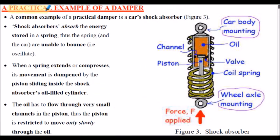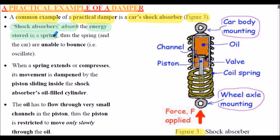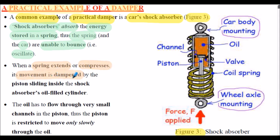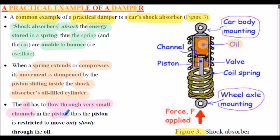Here's a practical example of a damper. A common example is a car shock absorber, shown in Figure 3. Shock absorbers absorb the energy stored in a spring — the coil spring is shown here — and thus the spring, and in this case the car, is unable to bounce or oscillate. When a spring extends or compresses, its movement is dampened by the piston sliding inside the shock absorber's oil-filled cylinder, using the oil inside the cylinder.